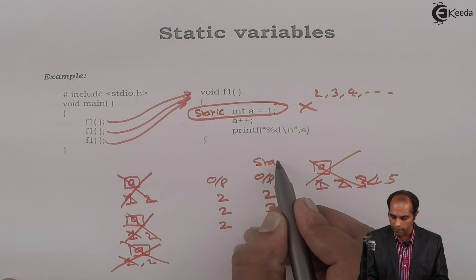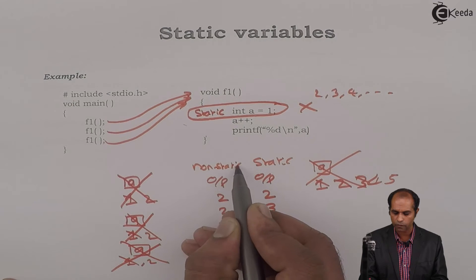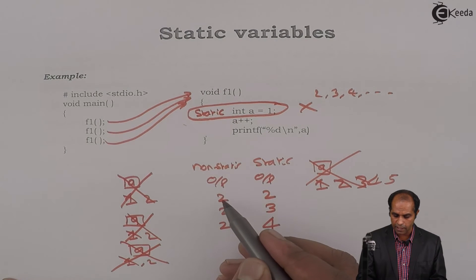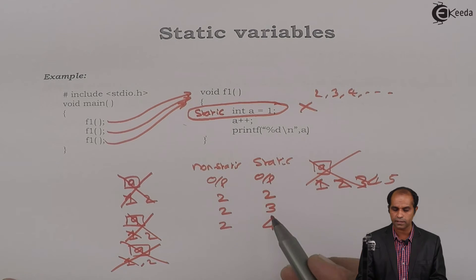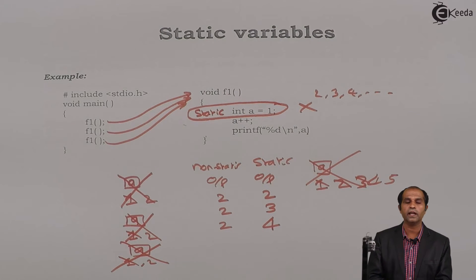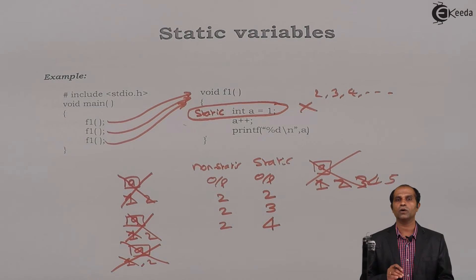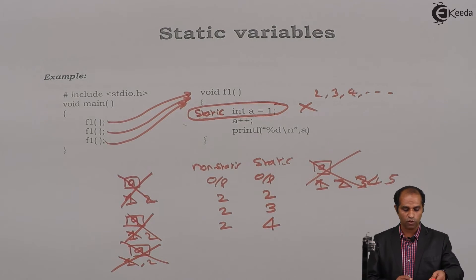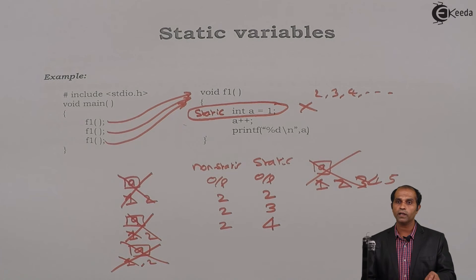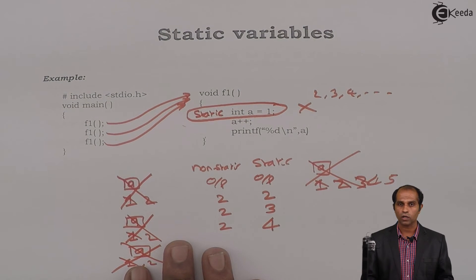So, with static and without static: non-static A says the variable is created and destroyed every function call. Static says the variable is created only once and destroyed at the end of the program. This variable is partially local and partially global. A variable which is created only once when the function is called for the first time and destroyed automatically at the end of the program is called a static variable.